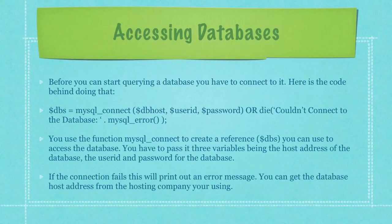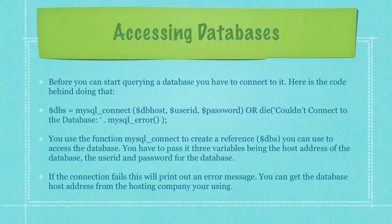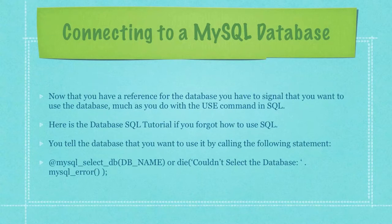Before you can start querying a database, you have to connect to it. You use the function mysql_connect to create a reference — in this case the variable named DBS — which you can use to access the database. You have to pass it three variables: the host address of the database, the user ID, and the password. If the connection fails, the OR statement will print out an error message. You would get the database host address from your hosting company. Now that you have a reference for the database, you have to signal that you want to use it, much as you do with the USE command in SQL. If you didn't see my SQL tutorial, you should most definitely check that out.